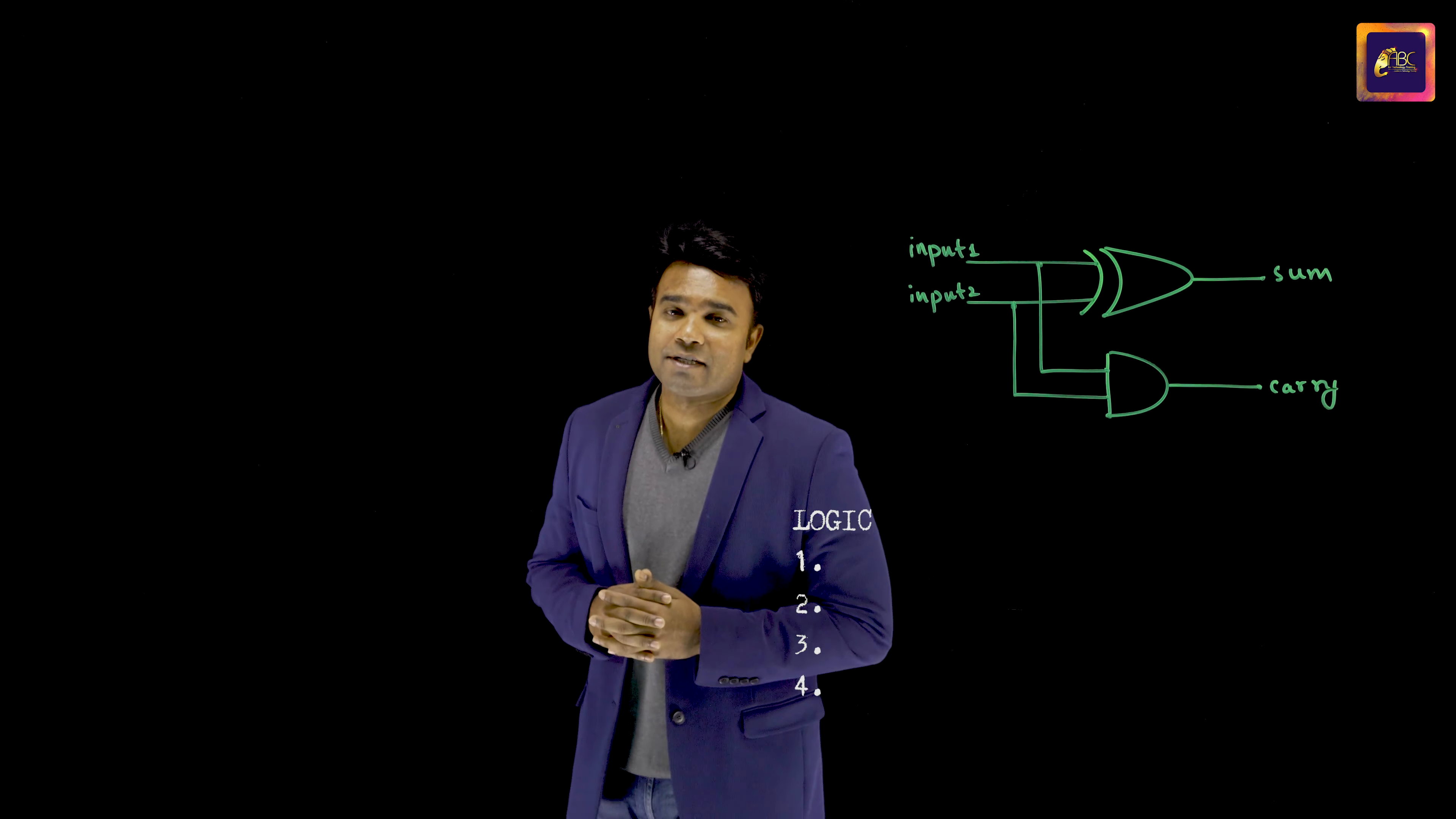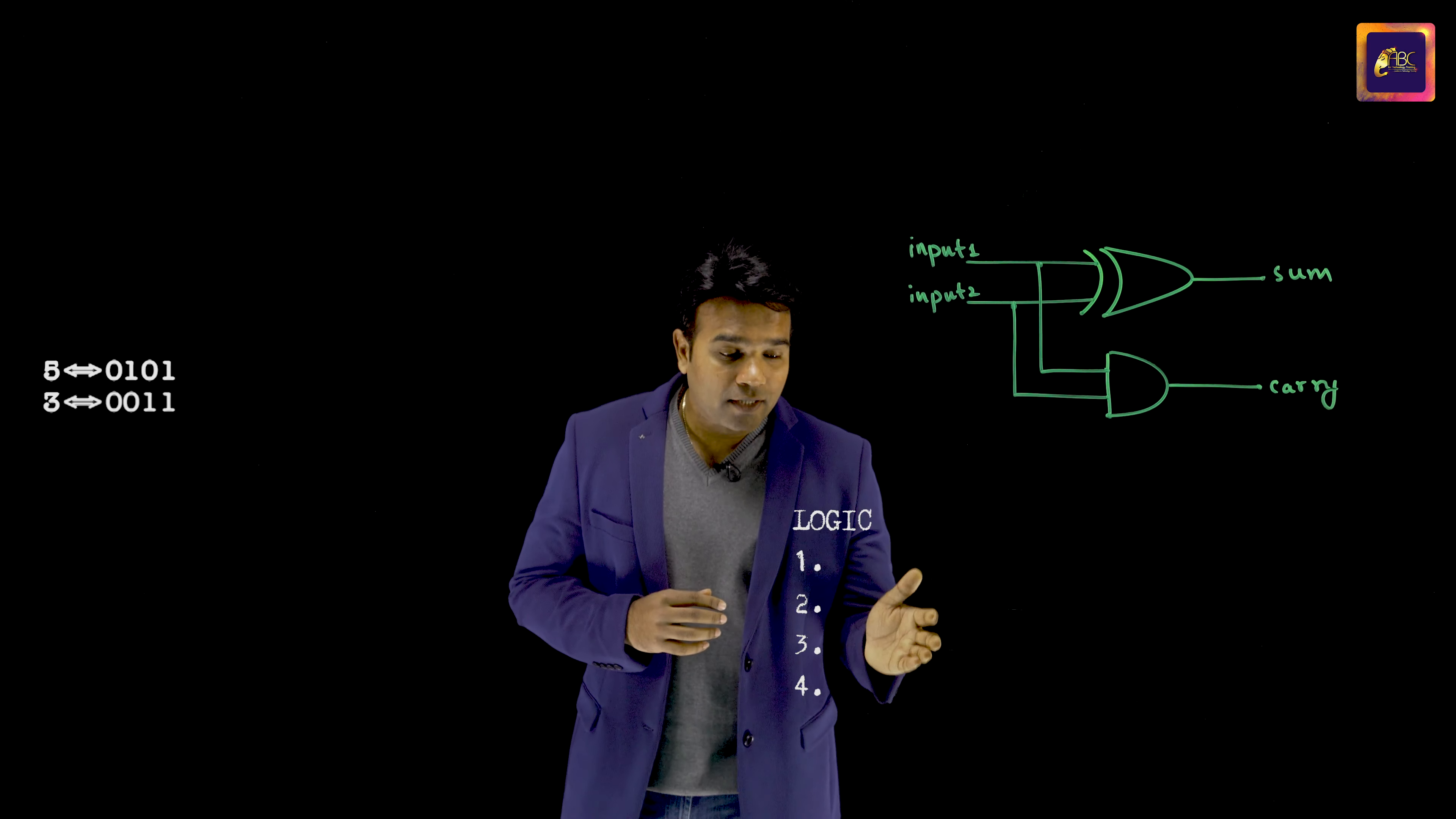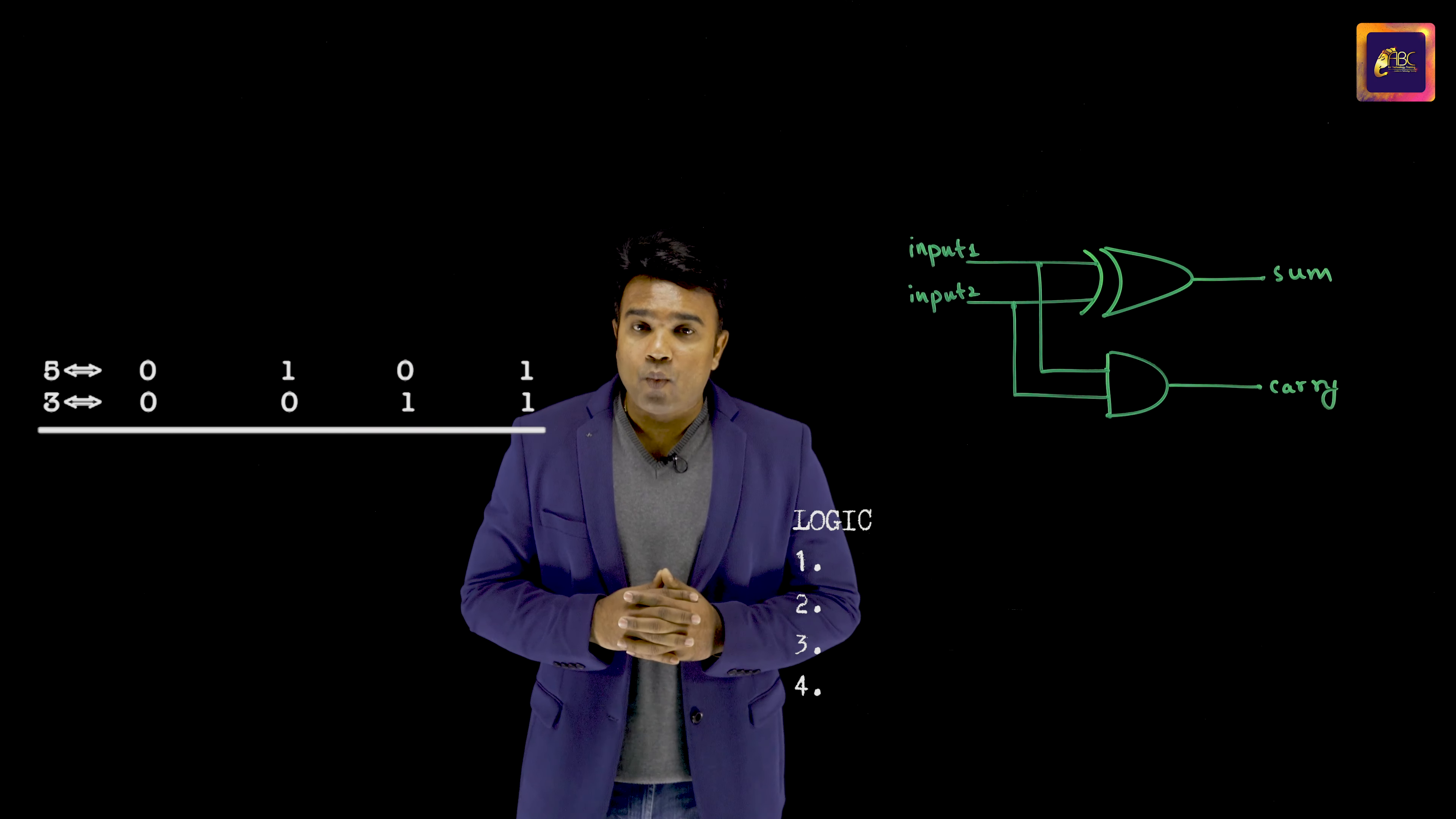Let me consider the integers 5 and 3. 5 in the binary form is like this, whereas 3 in the binary form is like this. I want to perform the addition of 5 and 3 using this circuit, using the logic I would be able to perform. I would expand this 5, I would expand 3, and as you can see, the least significant bits happen to be 1 and 1,